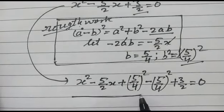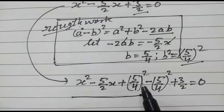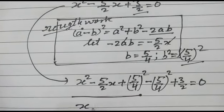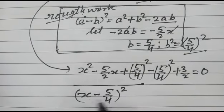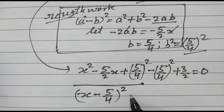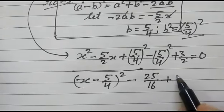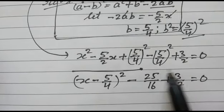Now this portion — x² minus 5/2 x plus (5/4)² — can be written as (x minus 5/4)². If we expand (x minus 5/4)², we will get this. So we have (x minus 5/4)² minus 25/16 plus 3/2 is equal to 0. This is our complete square form.